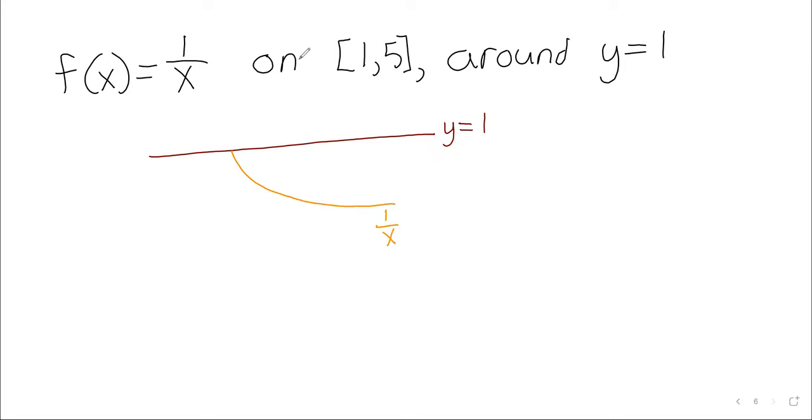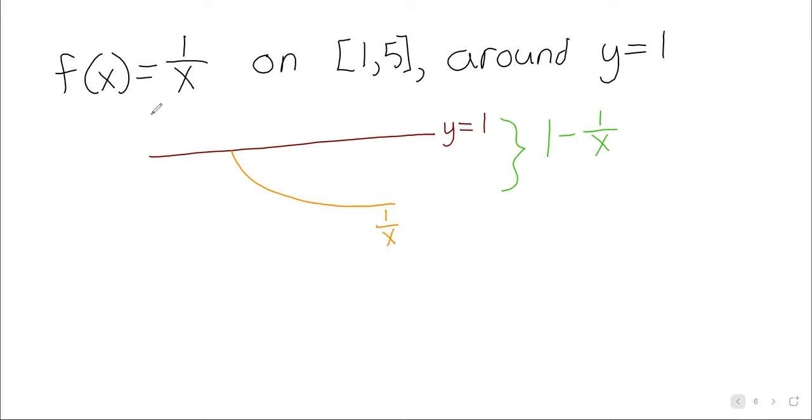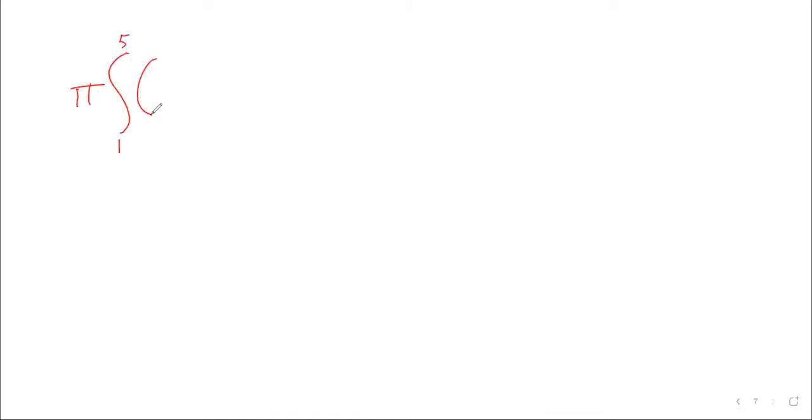It's important to know what the picture looks like, because it's important to know where the function is in relation to the line. Here the function was below the line, here the function was above the line. So as far as finding the radius, it's the upper minus the lower: 1 minus 1 over x.